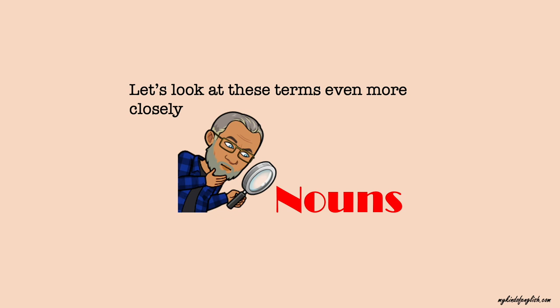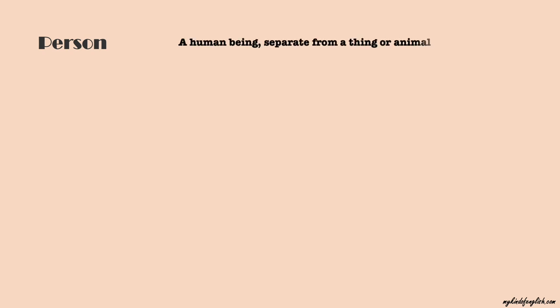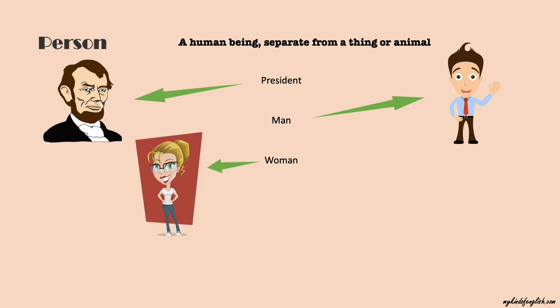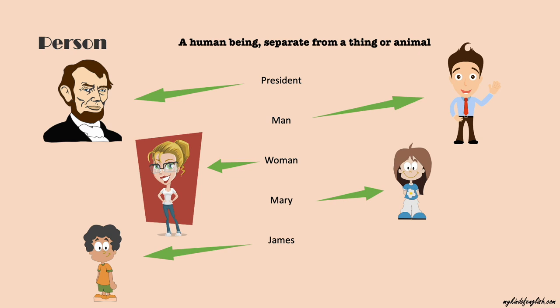Let's look at these terms even more closely. A noun can be a person — a human being separate from a thing or animal — such as a president, or a man, a woman. A name such as Mary, or an employee.